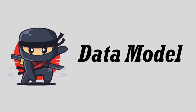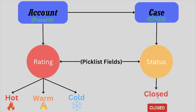Let's start with the data model for today's scenario. We have two objects: Account, which is the parent object, and Case, which is the child object. On the Account object, we have a picklist field called Rating which contains three values: Hot, Warm, and Cold. On the Case object, we have another picklist field called Status which contains many different values, but in today's scenario we are just going to use the value Closed.